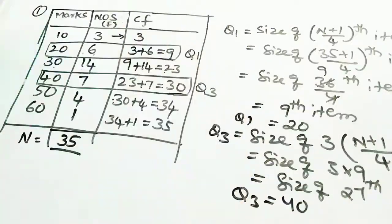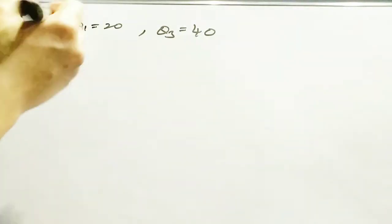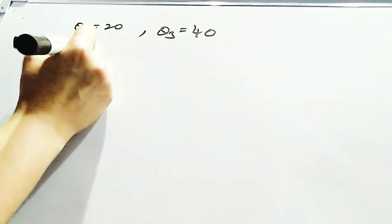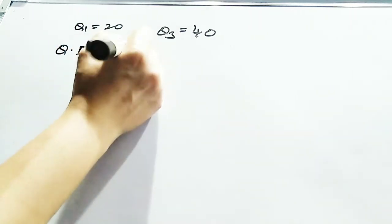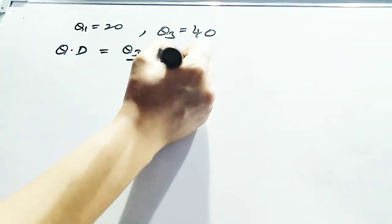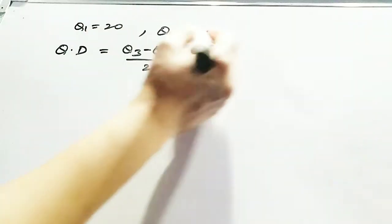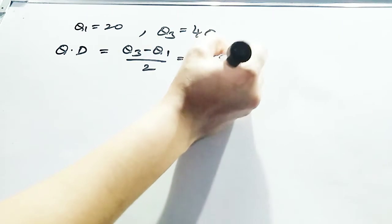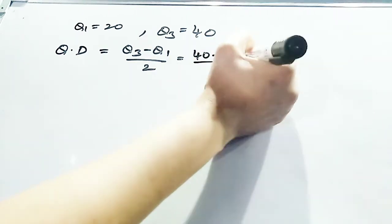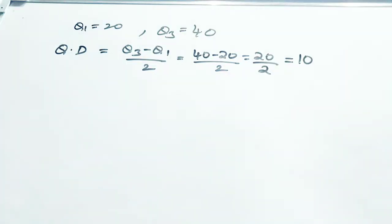Now substitute into the quartile deviation formula. QD = (Q3 − Q1) / 2 = (40 − 20) / 2 = 20 / 2 = 10. So the quartile deviation is 10.